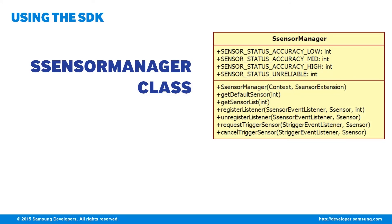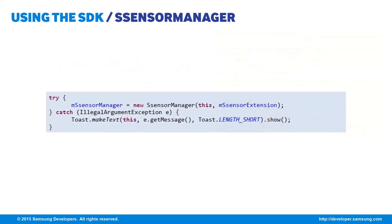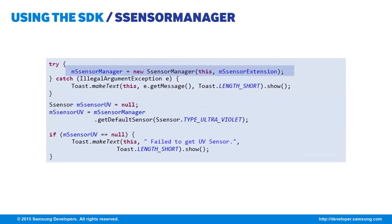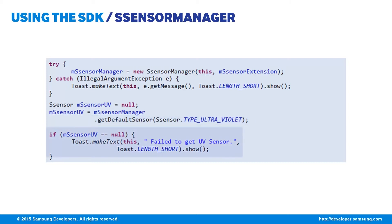The next class is sSensorManager, which can get the sSensor, register and unregister event listeners, and receive events. When you instantiate an sSensorManager object, you need to pass the context and the sSensorExtension object you made earlier. In our example, msSensorManager is instantiated in a try-catch block which can catch an illegal argument exception. With our sSensorManager and sSensorExtension objects initialized, we can now get an instance of the sSensor object. We define an sSensor object called msSensorUV, set it to null, then call msSensorManager's getDefaultSensor method with sSensor's type ultraviolet integer type as parameter, and check if the sSensor object is still null.